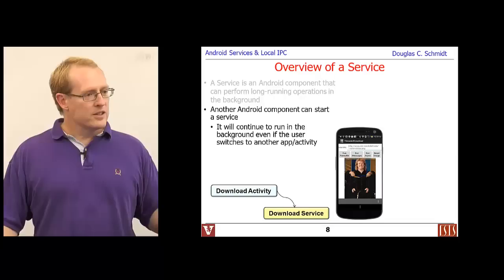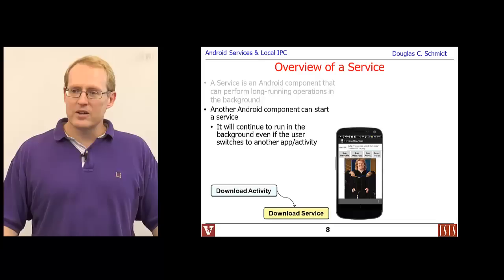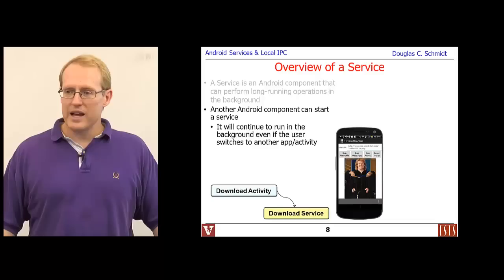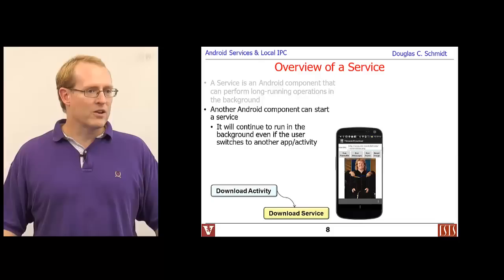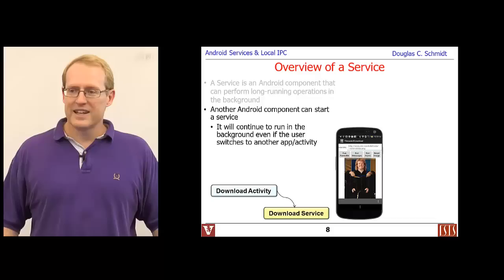Typically, other Android components are used to start services — most commonly activities. One interesting thing about a service is it can continue to execute in the background even if the activity that initially launched it goes away or if the user switches to a different activity. There can also be system services — long-running things not pegged to any particular user activity at all.